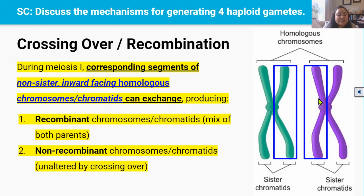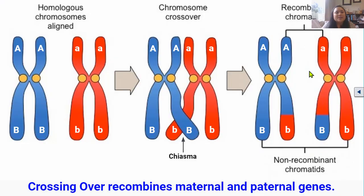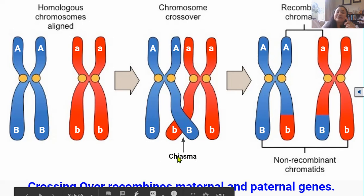These inward-facing chromatids from each homolog participate in the crossing over event, which involves the exchange of corresponding whole groups of genes. Corresponding means the same genes are crossed over between the homologous chromatids — for example, 50 genes at the very tip of the green chromatid are swapped for the 50 genes at the very tip of the purple chromatid. It must be corresponding genes. During crossing over, two non-sister chromatids of homologous chromosomes are seen to be interlocked at points called chiasmata — the plural of chiasma, which you learned about in video 4. A chiasma is the actual visible result of crossing over.